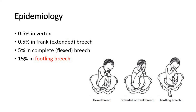For epidemiology, cord prolapse is mostly seen in footling breech, where it accounts for 15% of cases. Other types of breech can also have cord prolapse, but they are not as common.